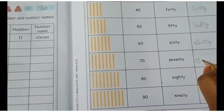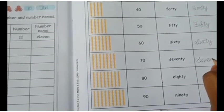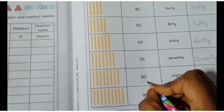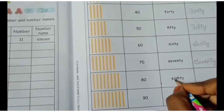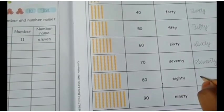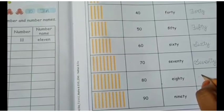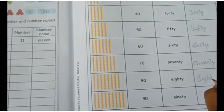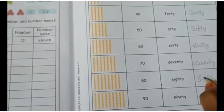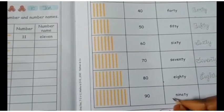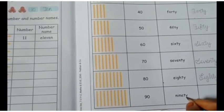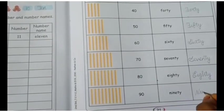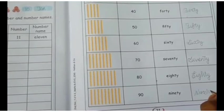After finishing reading only you want to write. Next 80 — E-I-G-H-T-Y. 80. The next number name is 90 — N-I-N-E-T-Y. 90.